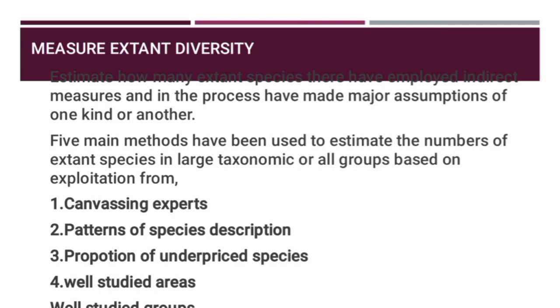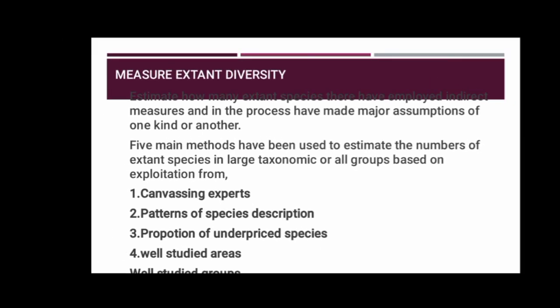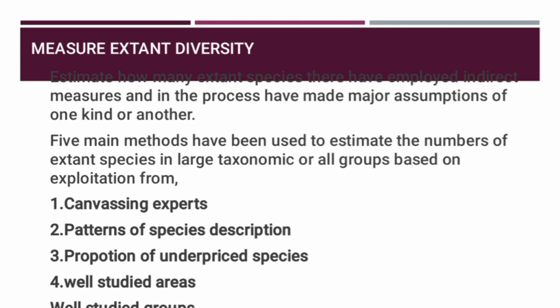Next is measuring extant diversity. The measurement of extant diversity has varying variety types. To estimate how many extant species there are, researchers have employed indirect measures and made major assumptions. The five main methods used to estimate numbers of extant species are: canvassing experts, patterns of species description, proportion of undescribed species, well-studied areas, and well-studied groups.